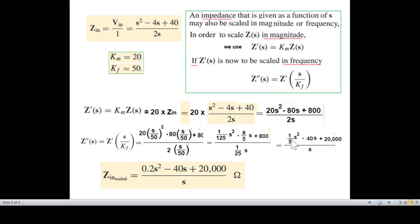The same thing we can write from here: 1 over 5 times 0.2s squared, then 4s minus 40s, and then 20,000 divided by s. I hope you have been able to follow this. Please let me know through your feedback. Thank you.